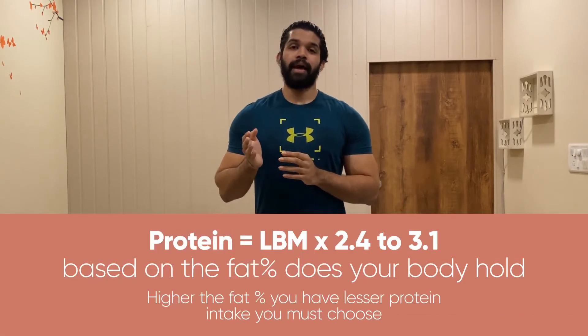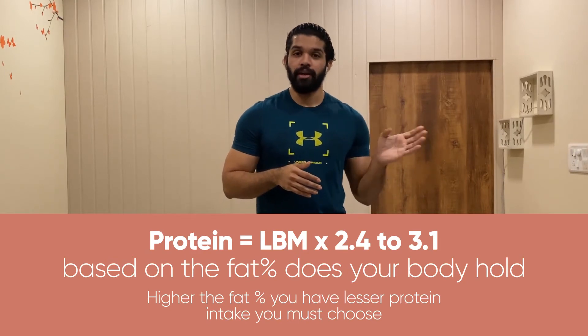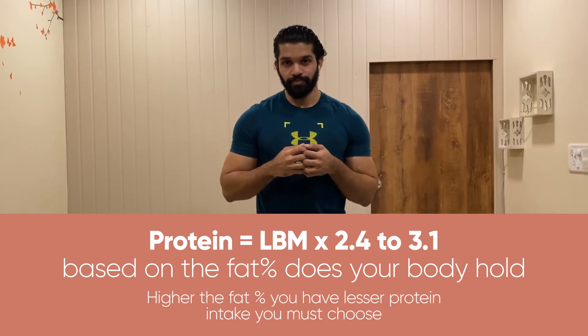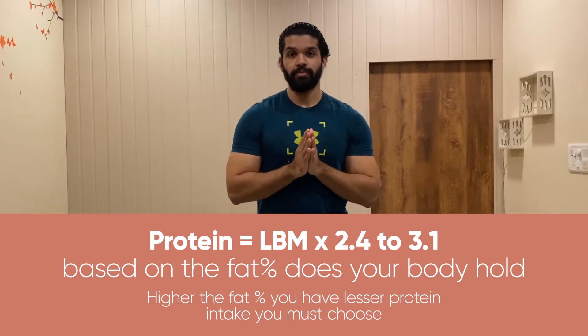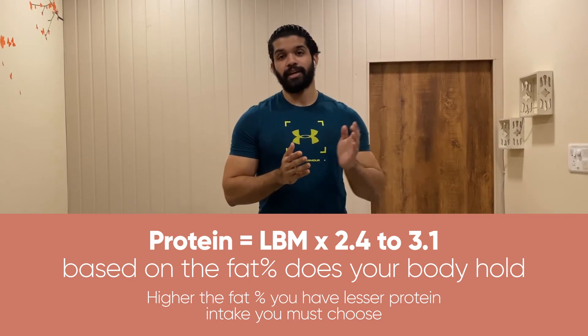The next step: we need to calculate how much protein, fat, and carbohydrates we need to take. To calculate your protein, multiply your lean body mass with 2.4 to 3.1 based on how much fat percentage your body holds. If your body holds a higher fat percentage, choose the lower side of the protein. If your body holds a lower fat percentage, choose the higher side of the protein.